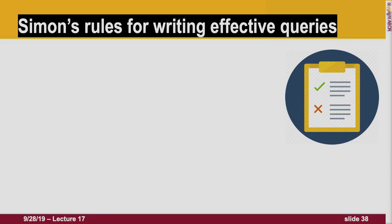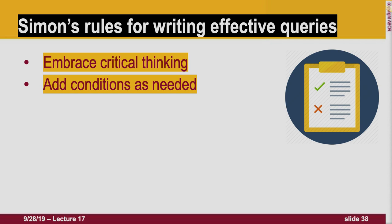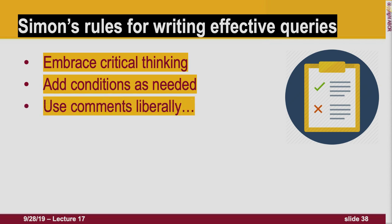In the case of the Northwind database, knowing which fields are primary keys and which are foreign keys in other tables is important. More tips on writing queries: embrace critical thinking — why isn't your query working, why is it returning different results? Sometimes it makes sense to step away from a query if it's hurting your brain. Add conditions as needed — it's not inconceivable that someone will ask you to pull the same query for a different set of records, like customers from the west instead of the east.